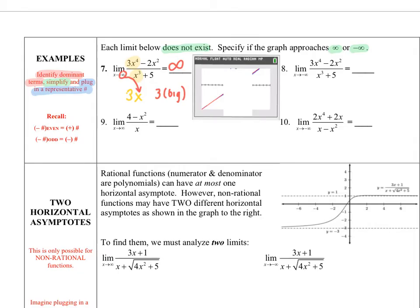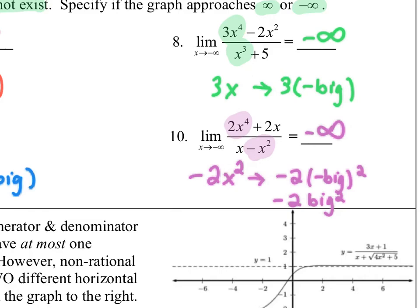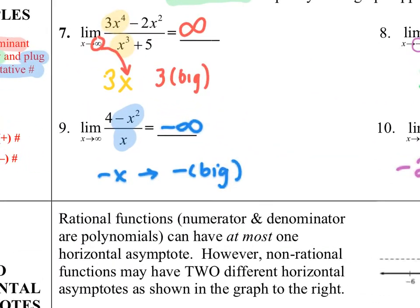On question eight, I pull out my dominant terms and simplify to 3x. Then I imagine a really big negative number plugging in for x, and 3 times a negative number would be negative infinity. On number nine, the dominant terms simplify into negative x. If I plug in a positive infinity, I get a negative big number, which is negative infinity — so that's my answer.